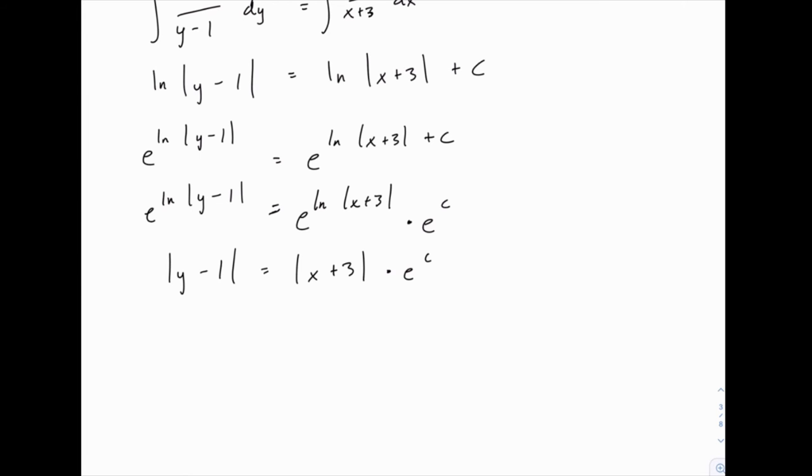Also, I'm going to deal with these absolute value signs, and I'll show you how. The absolute value of the left side and the absolute value of the right side are connected. What that means is y minus 1 equals plus or minus x plus 3 times e to the c. In other words, if their absolute values are equal, the only difference between them might be a plus or minus sign.